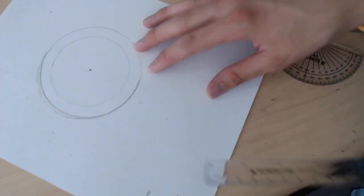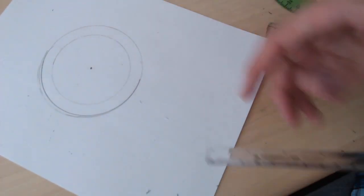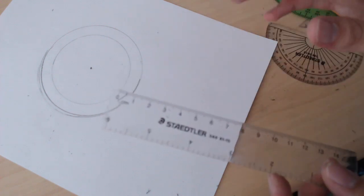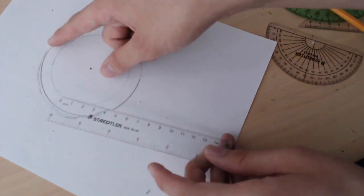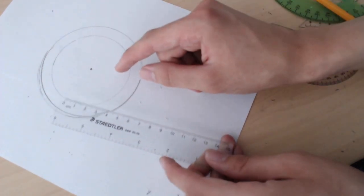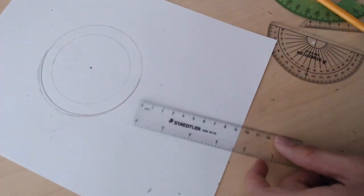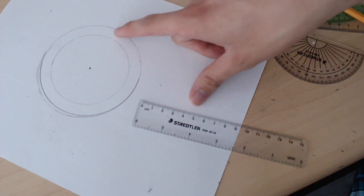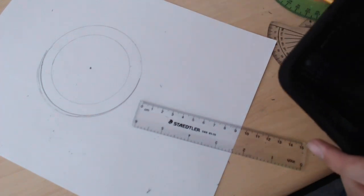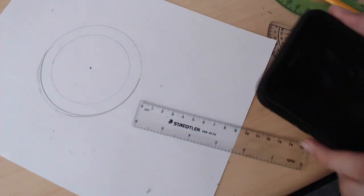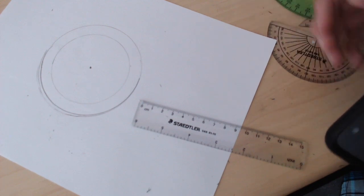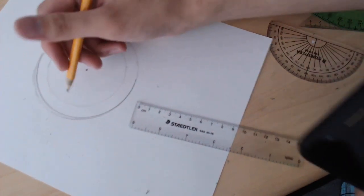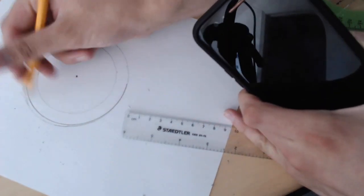So now we have roughly plotted out two circles and now we want to divide our gear into multiple sections. So this gear is going to have 24 teeth and we can actually figure that out by calculating it.